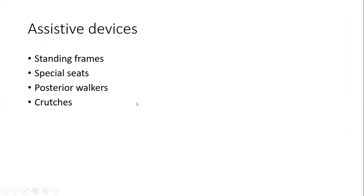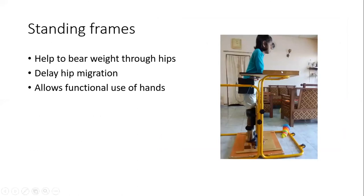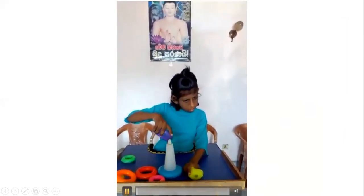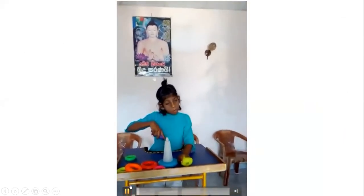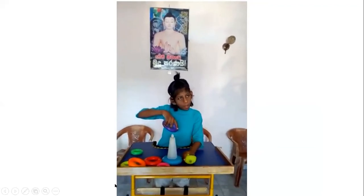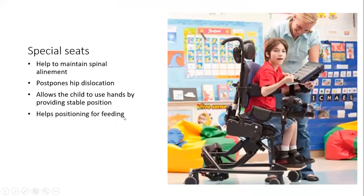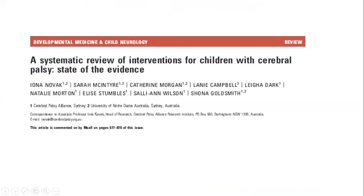Assistive devices used include standing frames, special seats, posterior walkers, and crutches. In a standing frame, the child is able to stand and work — standing stability helps perform activities that can improve hand functions. Special seats help to maintain spinal alignment, prevent hip dislocation, and make feeding and activities easier.